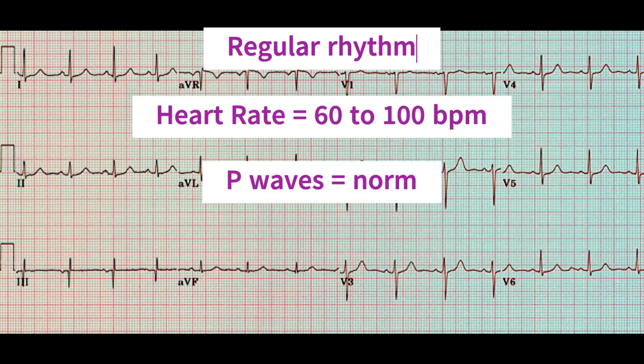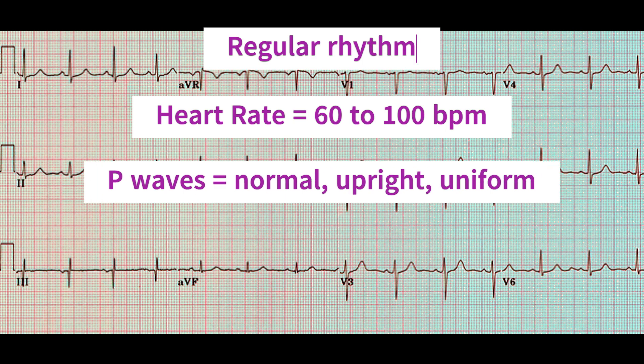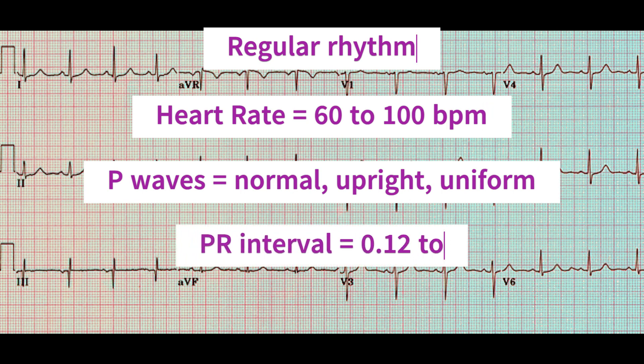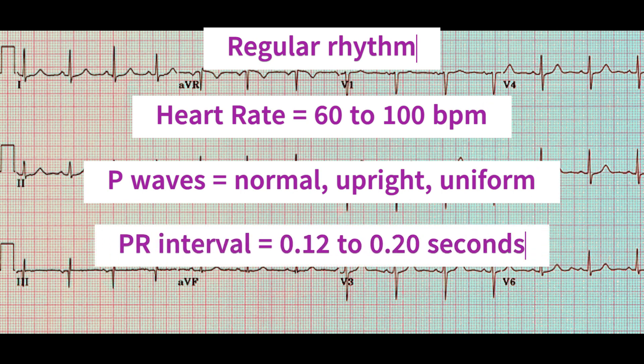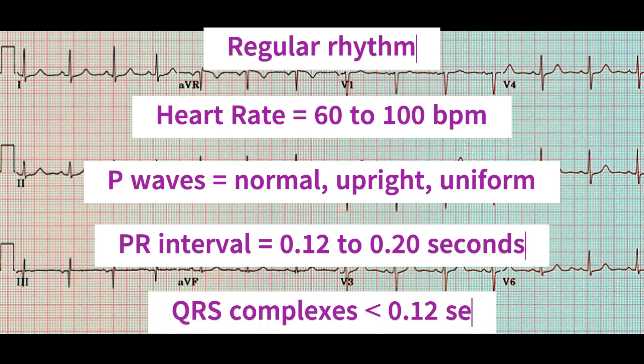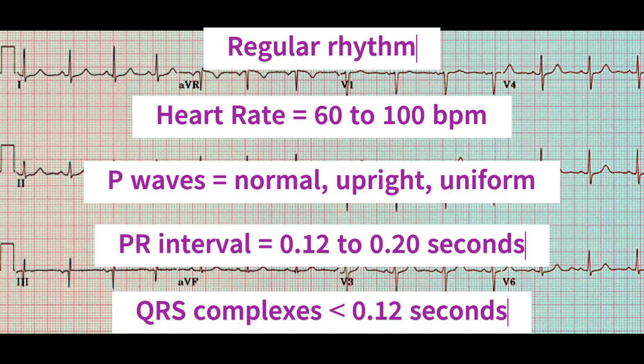The P-waves are all upright, they all look alike, and there is one P-wave before each and every QRS complex. The PR interval would be between 0.12 to 0.20 seconds. The QRS complexes are all normal, with a narrow duration of less than 0.12 seconds.